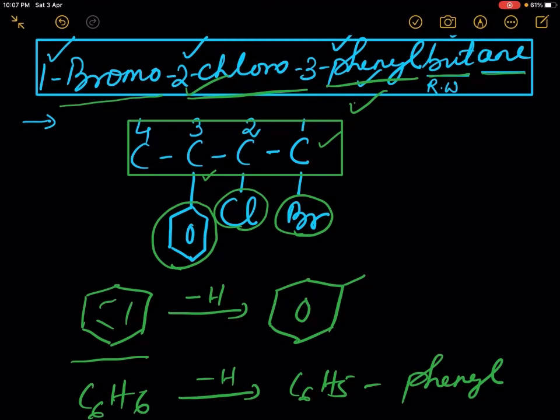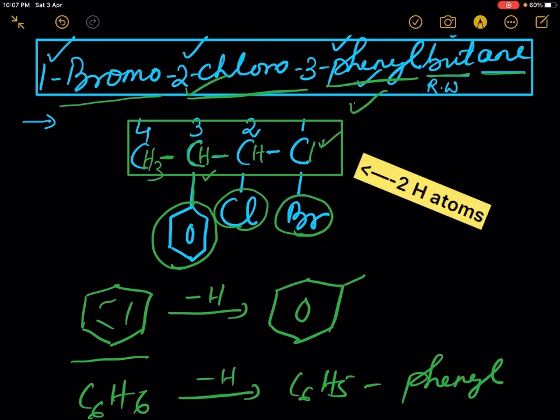Then we have to fill the skeleton with hydrogen atoms. This carbon has 3 hydrogen atoms because there is one bond with this carbon. This carbon has 3 bonds on 3 sides, so it has only 1 hydrogen atom. And this carbon also has 1 hydrogen atom. And this carbon has...